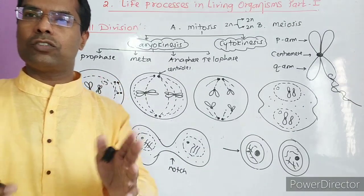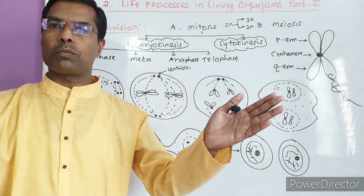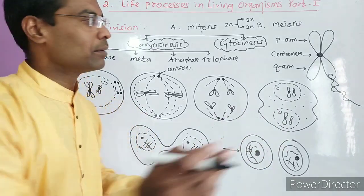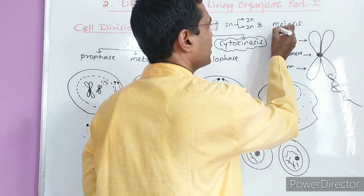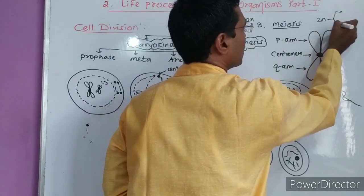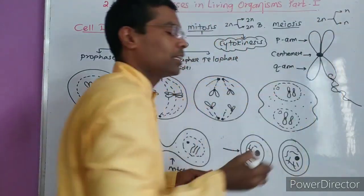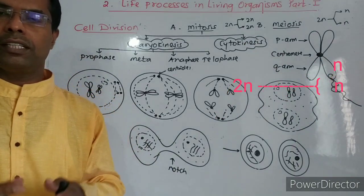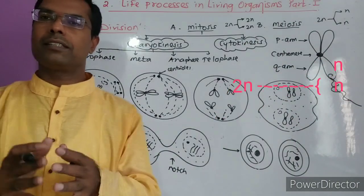The cell that consists of twice the number of chromosomes is called a diploid cell. But in meiosis, what happens? In meiosis, 2N gives N, N. N means haploid cells, that is gametes. In this way, cell division is the process.